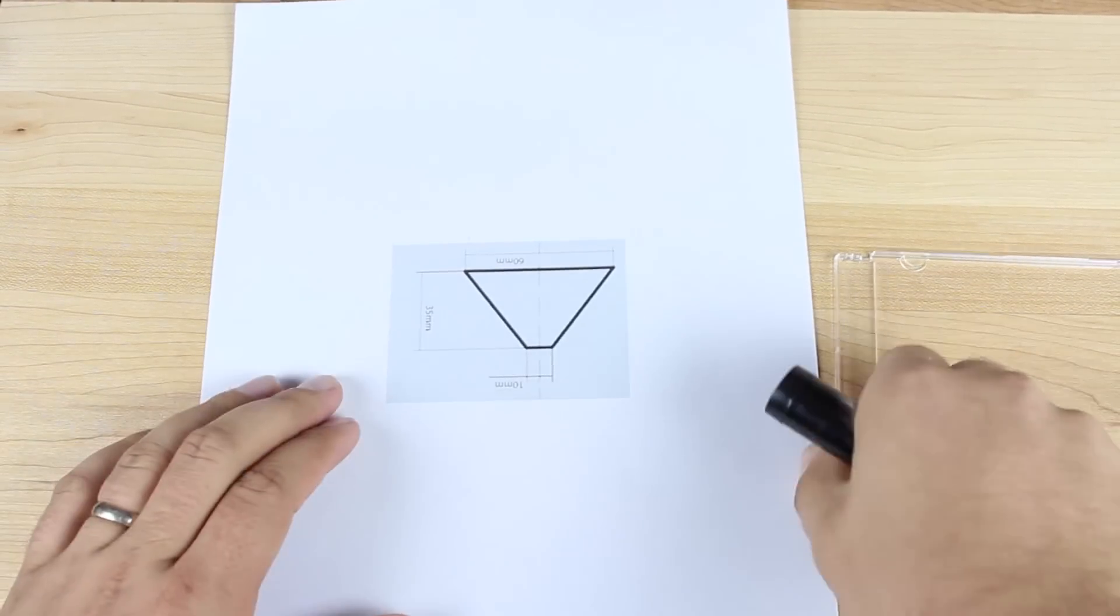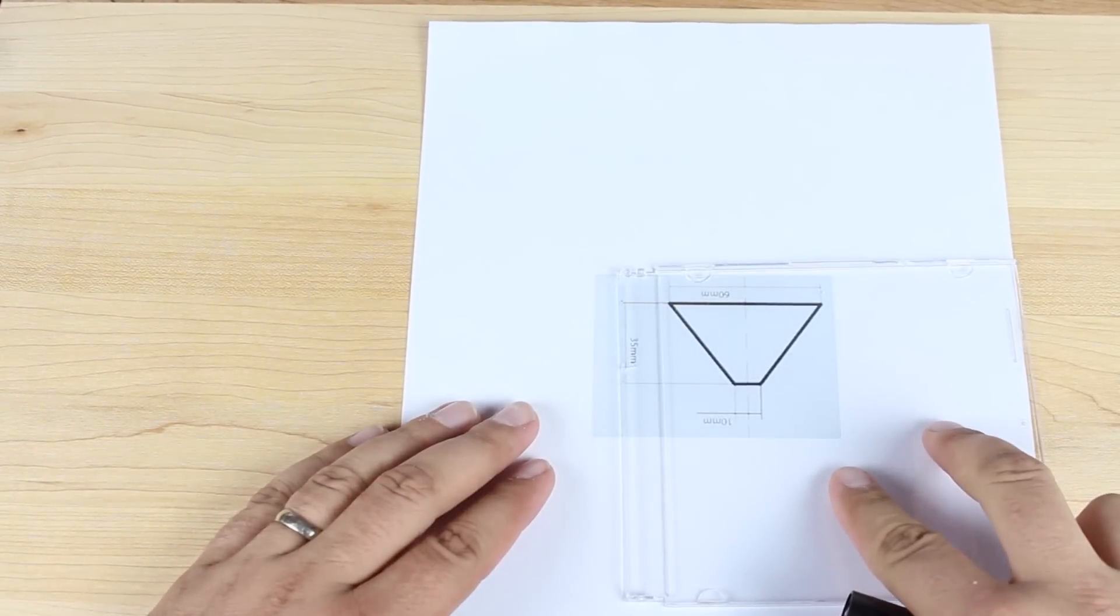Alright guys, so first up you'll want to head to the link in the description and grab the pre-made diagram. Now I have shrunk the diagram down so that all you have to do is print the diagram. Next what you want to do is take a CD case apart.